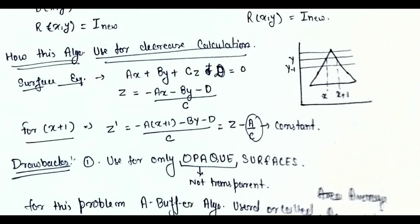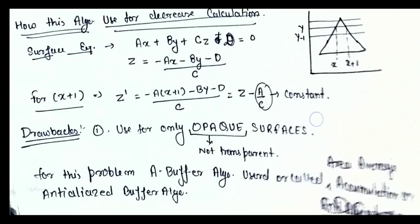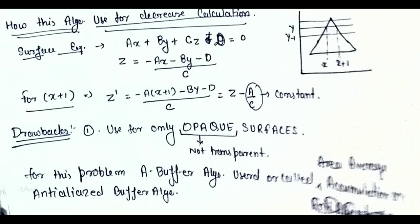One drawback of this algorithm is that it is used only for opaque surfaces — surfaces that are not transparent. For transparent surface removal, you would use the A-buffer algorithm, also called the anti-aliasing buffer or area-average accumulation algorithm, which will be discussed in the next video. I hope you now understand the Z-buffer or depth buffer algorithm.